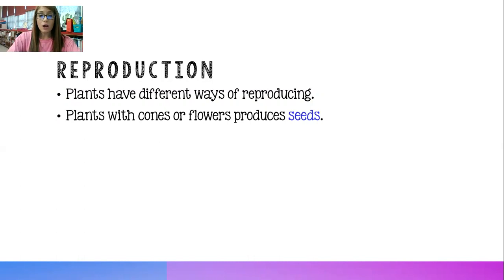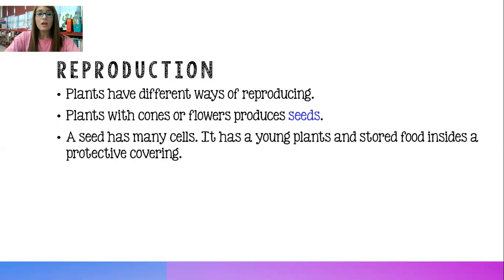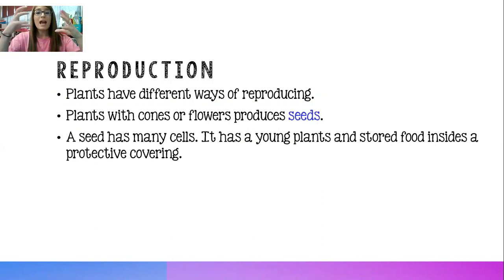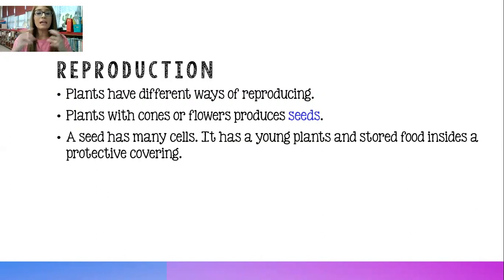Plants that have cones or flowers produce seeds. A seed has a whole bunch of cells in it — it's got a really young plant in it, and then it's got stored food around the young plant, and then it's in that protective covering which is the seed.